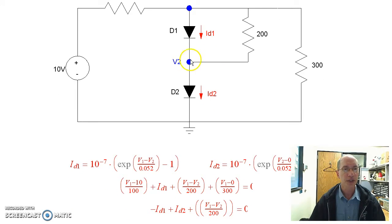And the second equation: current through this diode, which is minus ID1, plus ID2, plus current through the 200 ohm resistor, has to add to zero.